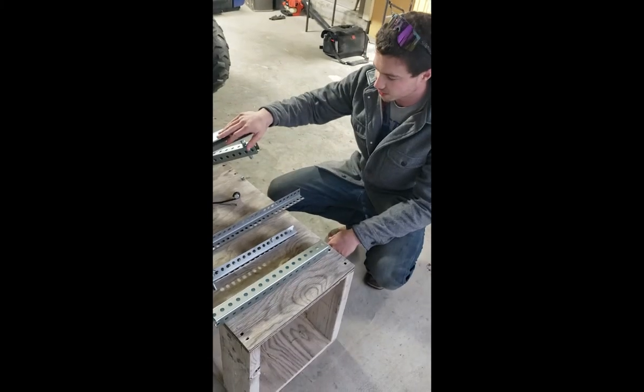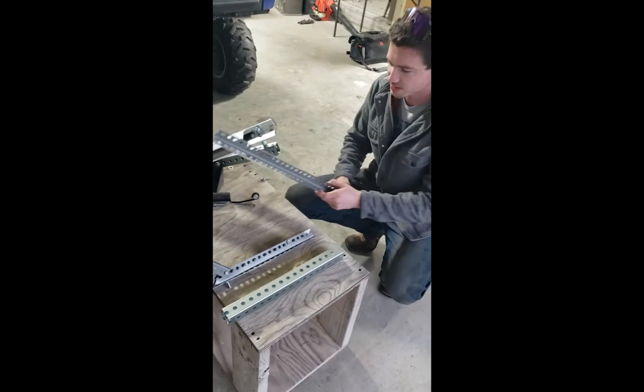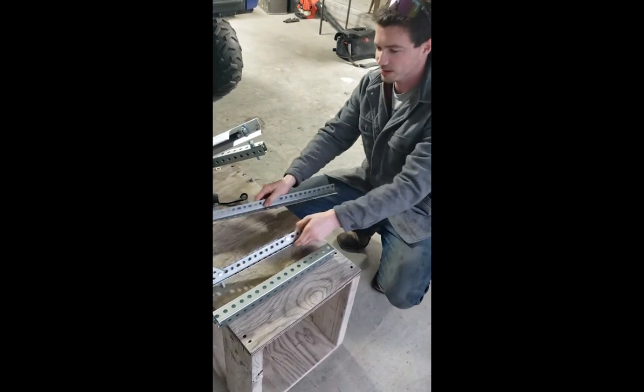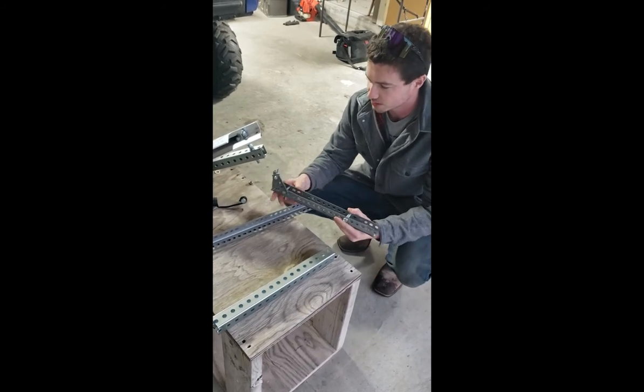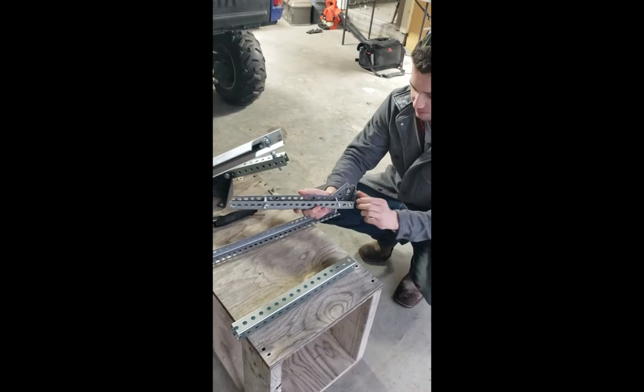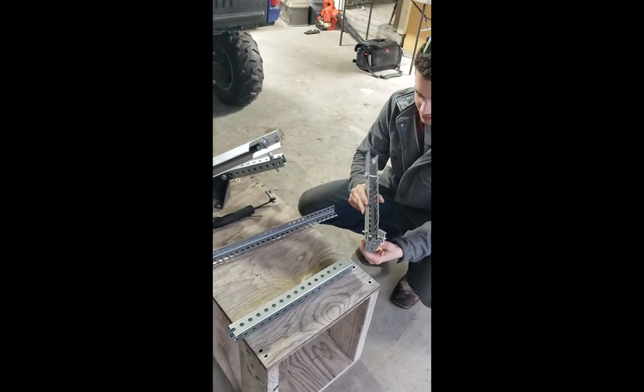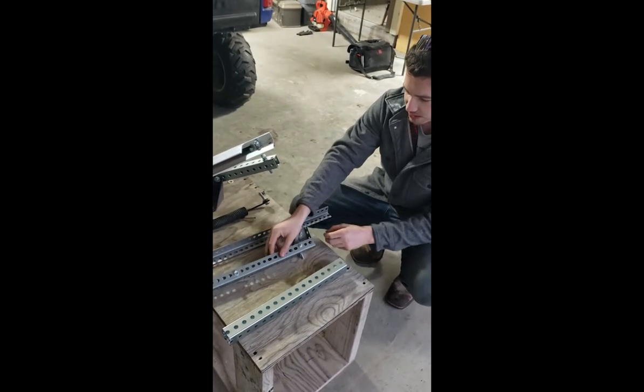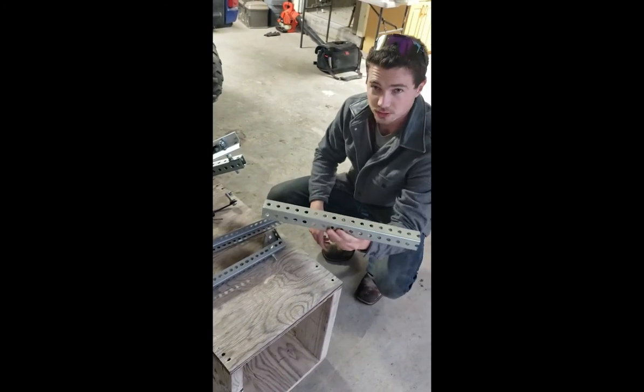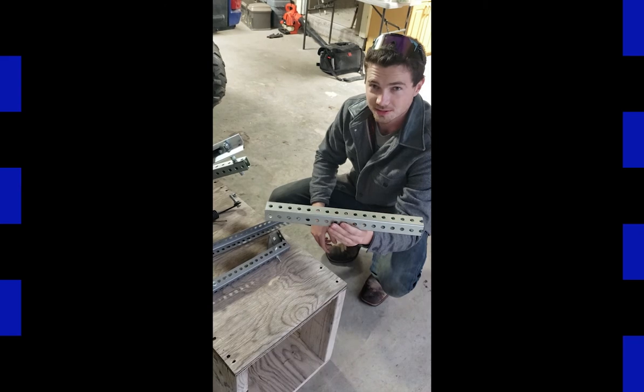Building this clay thrower, first we started with this piece of angle with holes in it, and after making our prototype we found out really quick that it wasn't going to be strong enough to hold our spring because it started bending in places. So we decided to brainstorm, and we came up with getting square tube with holes in it, and it has held up a lot better than our angle.